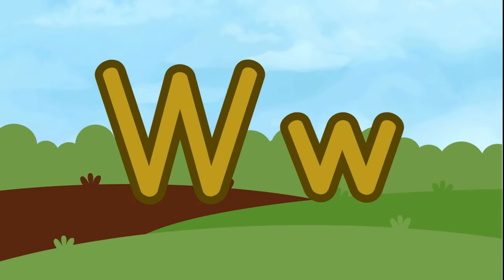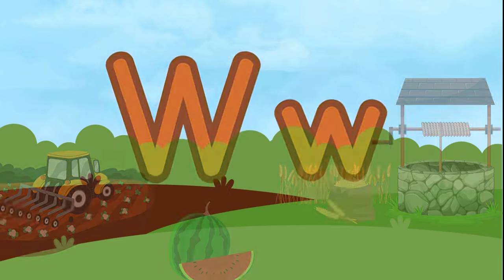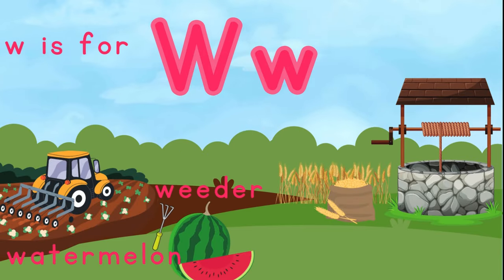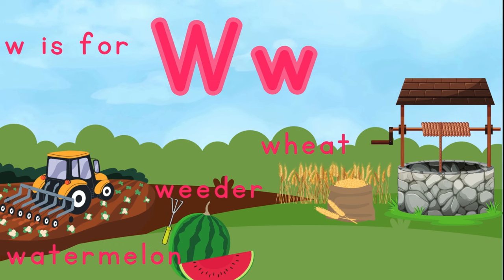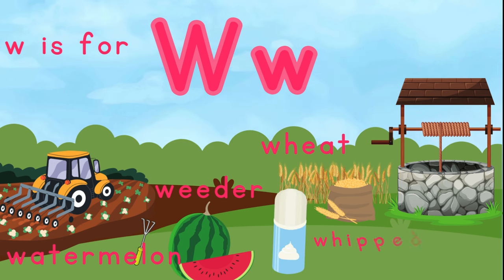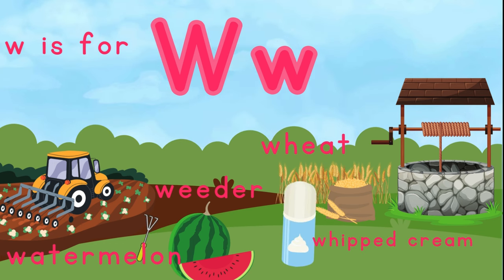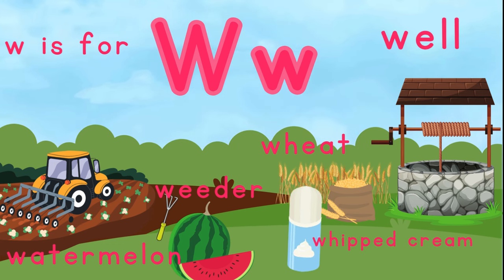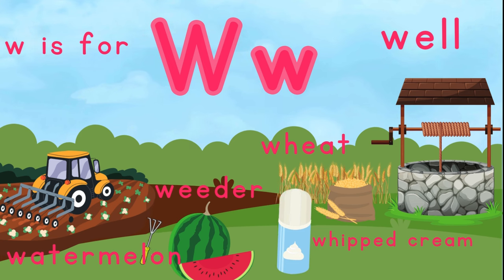This is the letter W. W is for watermelon. W is for weeder. W is for wheat. W is for whipped cream. And W is for well.